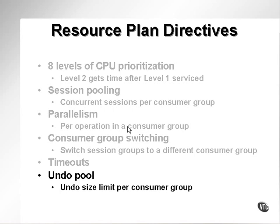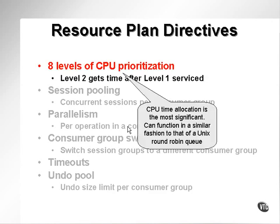Apart from session pooling, parallel processing, consumer group switching, timeouts, and undo pool size limits, from my perspective the most important aspect of resource consumer groups and plan directives is the allocation of CPU time — that's the most critical factor. It functions in a similar fashion to a Unix round-robin queue, except that it has level prioritization. You can basically split up processing between different users, giving some users higher priority than others so their work gets executed quicker.